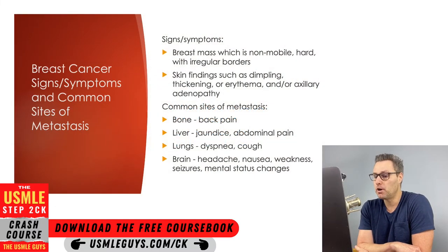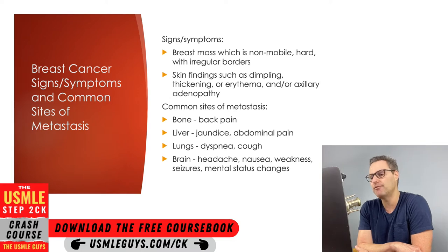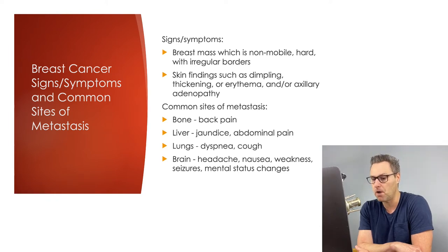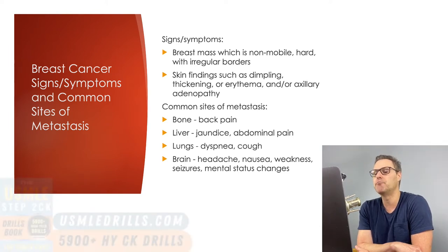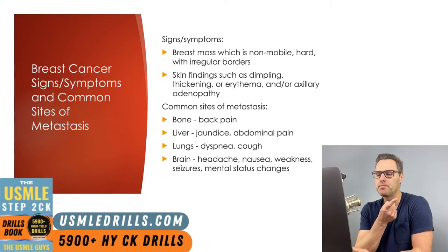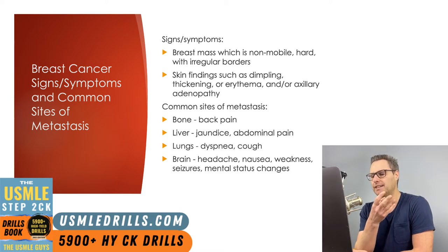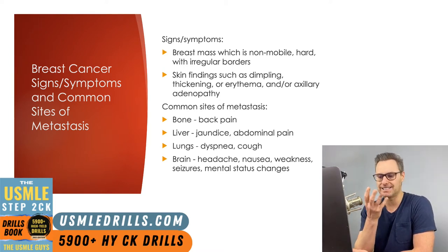In part one of this lecture, we went over screening for breast cancer, which is how the majority of breast cancer cases are going to be detected. However, a little less than half of all patients will present with a breast mass that was either not visible with screening mammography or that developed in the time between screenings. Signs of breast malignancy include a breast mass that's not mobile, that's hard, and that has irregular borders. You may also want to be on the lookout for skin findings including dimpling, thickening, or erythema. And depending on whether the cancer has advanced, local axillary adenopathy might also be present.